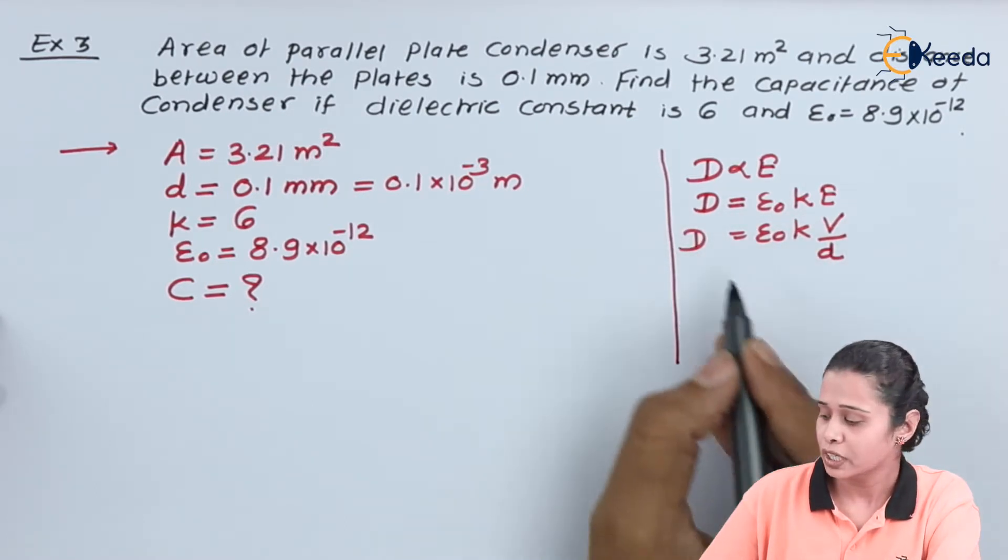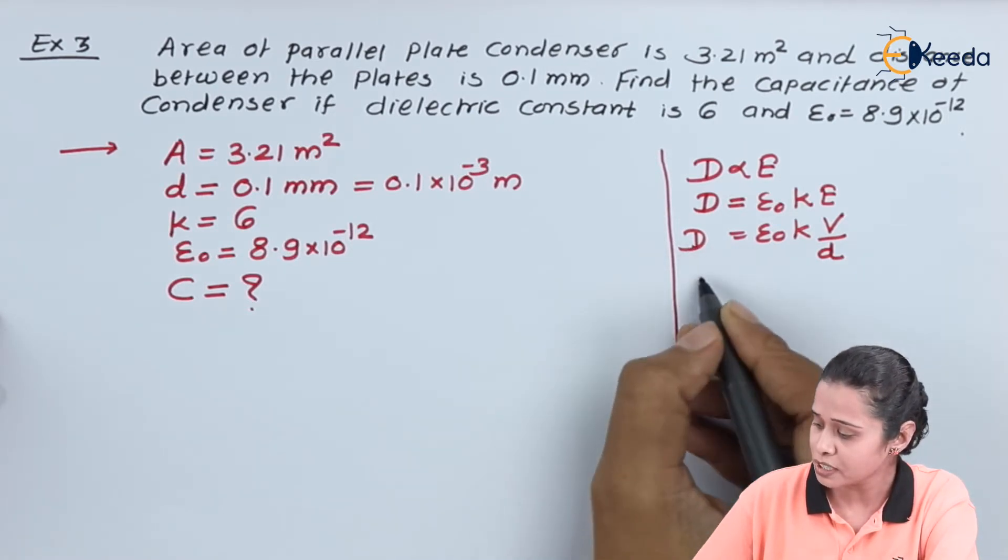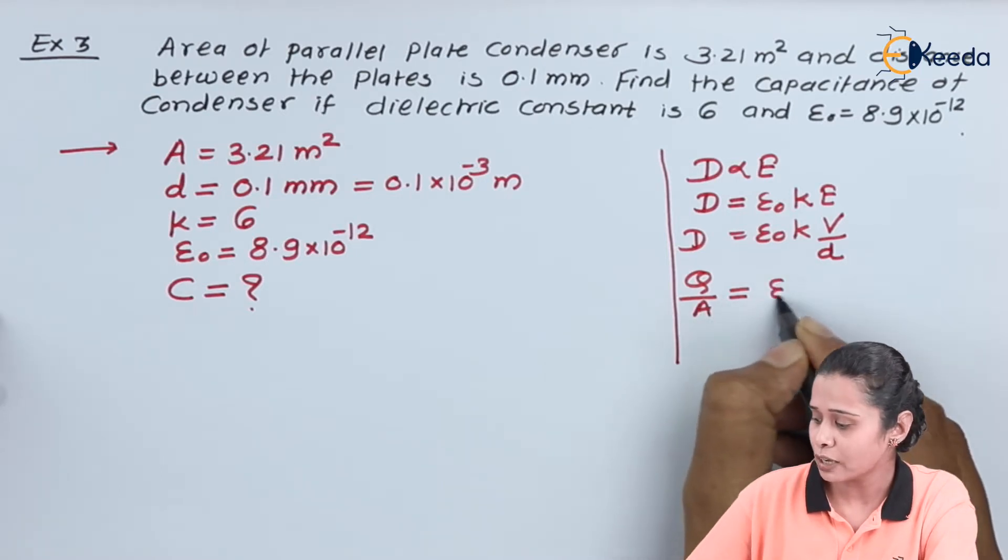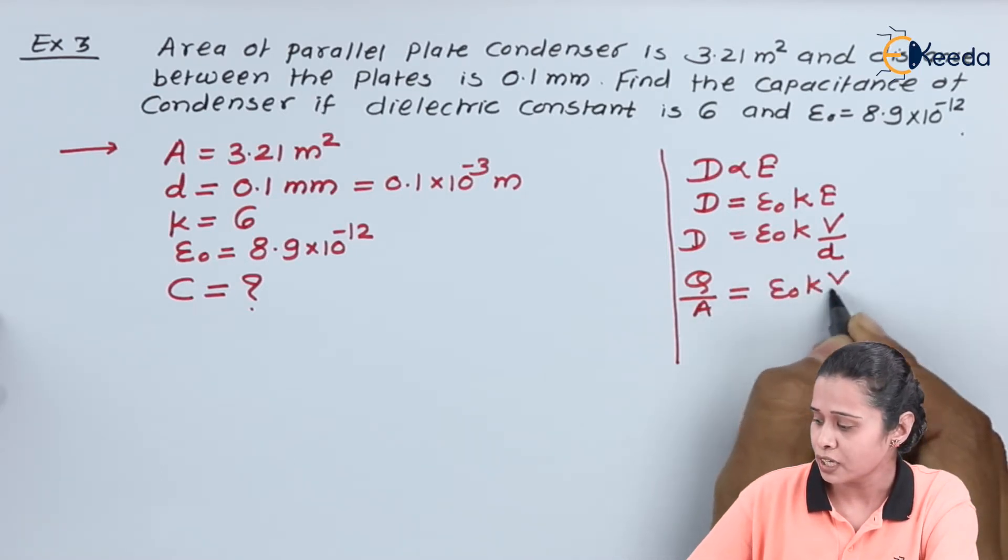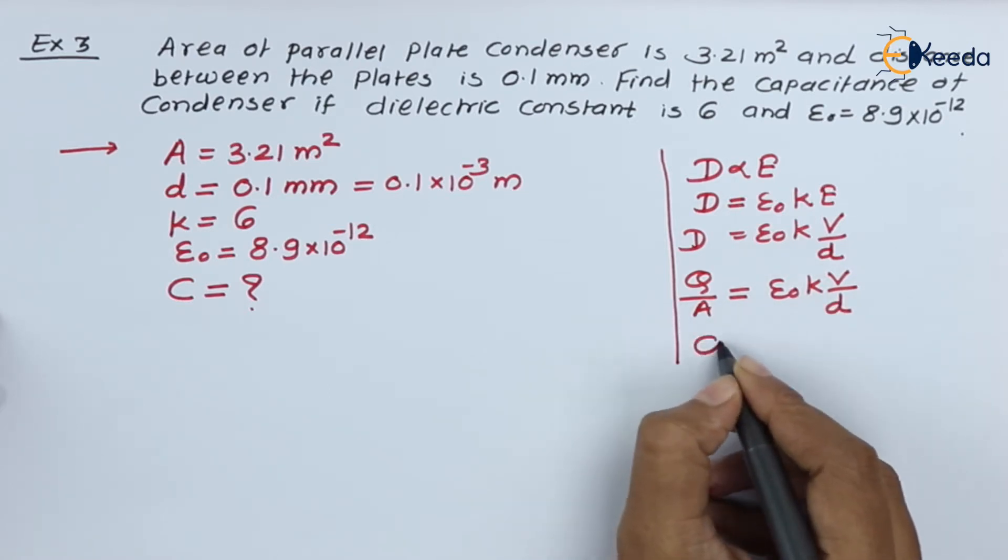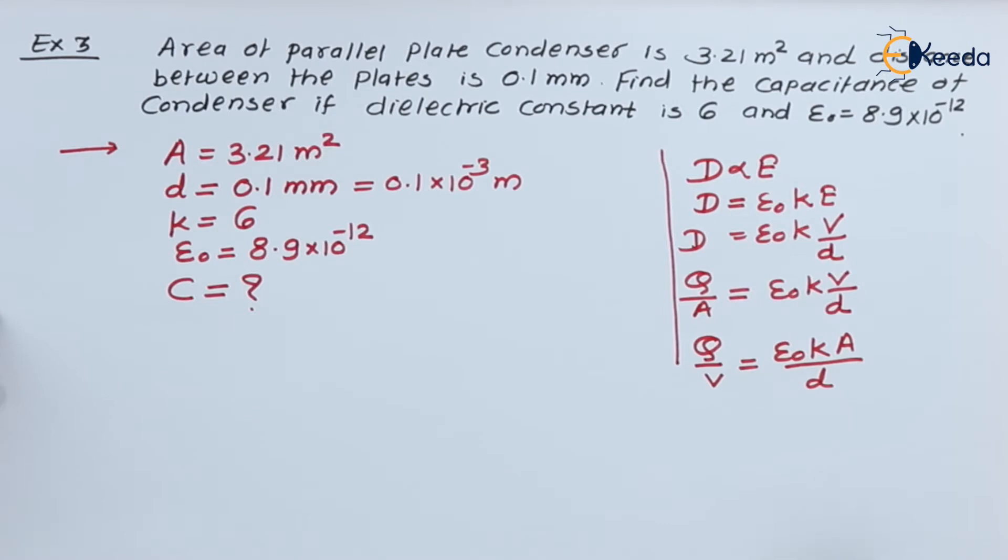And we know D is nothing but the charge per unit area, so instead of this D we can write charge per unit area which is equal to epsilon naught k V by d. Let us rearrange this equation. We have Q by V is equal to epsilon naught k A by d, and we know capacitance is equal to charge upon potential.